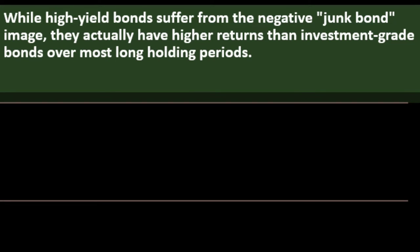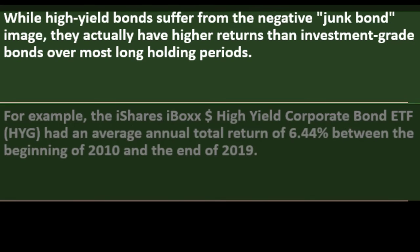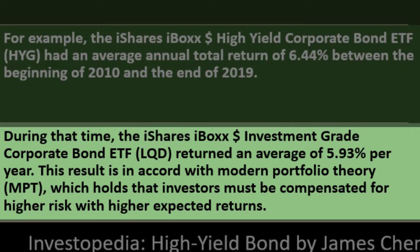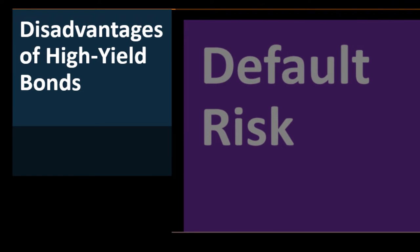Higher expected returns: while high yield bonds suffer from the negative 'junk bond' image, they actually deliver higher returns than investment grade bonds over most long holding periods. For example, the iShares iBoxx Dollar High Yield Corporate Bond ETF (HYG) had an average annual total return of 6.44% between 2010 and 2019, while the iShares iBoxx Dollar Investment Grade Corporate Bond ETF (LQD) returned an average of 5.93% per year. This is consistent with Modern Portfolio Theory (MPT), which holds that investors must be compensated for higher risk with higher expected returns.